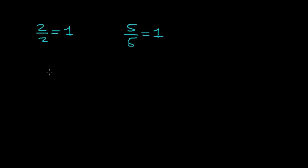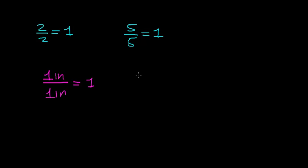In a similar way, whenever we have a number that includes units, when we divide this number by itself — including the units — we get the number 1. So 1 inch divided by 1 inch equals 1. Just like 2 centimeters divided by 2 centimeters also gives us the number 1.